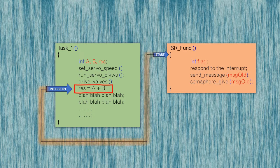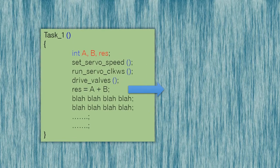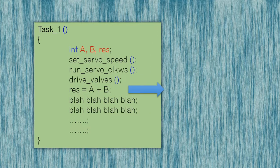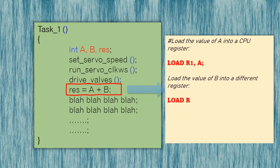The very first thing the CPU does is complete or conclude the current instruction that was partially completed. It's worth noting that this instruction can be a C instruction or the compiled low-level actual machine instruction which resides in the code segment of the memory.